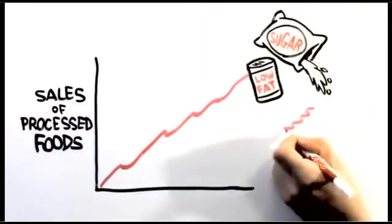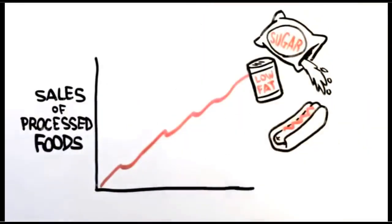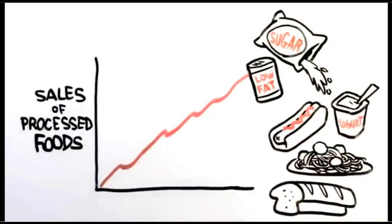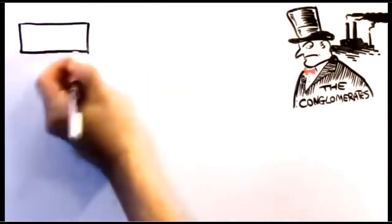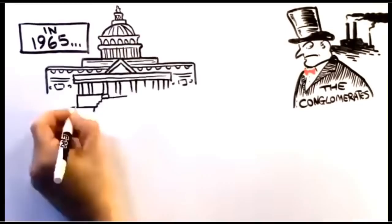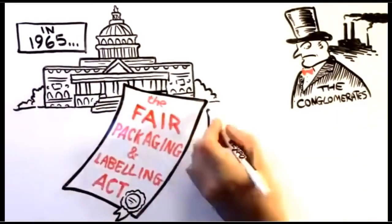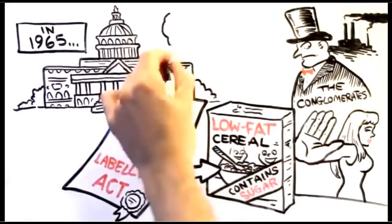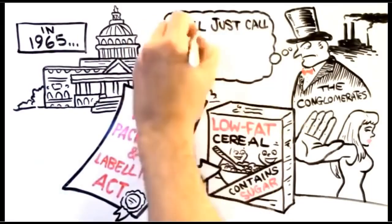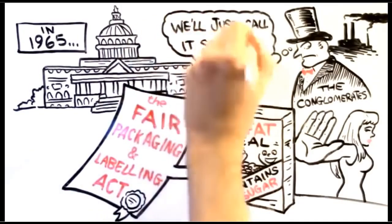It began to find its way into foods you would never expect, like hot dogs, yogurt, spaghetti, and breads. As the decades passed, obstacles would spring up, but each time, the conglomerates had an answer. In 1965, the Fair Packaging and Labeling Act began, requiring their products to be honestly and informatively labeled. By this time, the public wasn't so hot on sugar anymore, but that made no difference. The conglomerates...